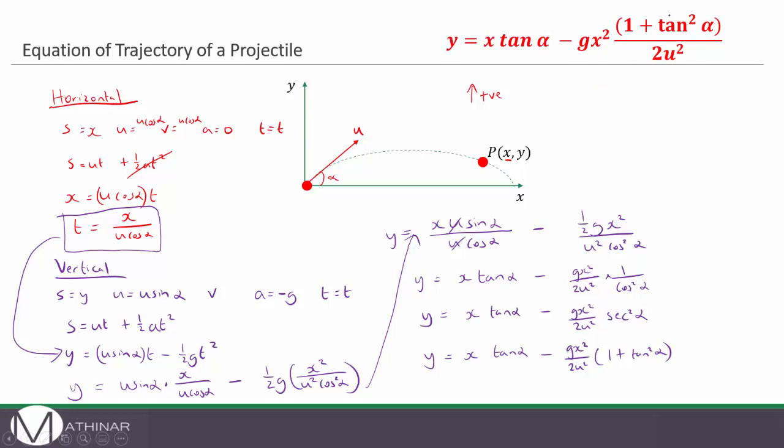And then if you want you can rewrite it in this form so y is equal to x tan alpha minus g x squared and then on the top one plus tan squared alpha over two u squared and that there is the equation of trajectory of a projectile.